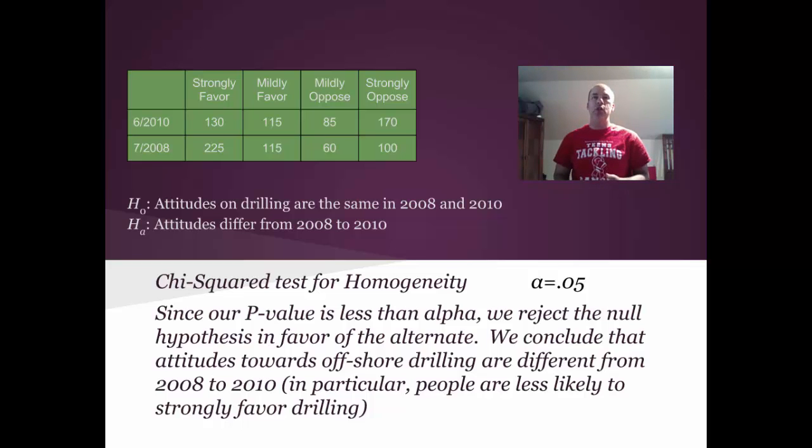So a chi-squared test for a two-way table here for homogeneity is not much different than the goodness-to-fit test. Just the mechanics are slightly different when we talk about the expected counts.